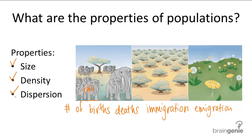The last property of populations is dispersion, and there are three different patterns of dispersion. The most common is clumped dispersion, which occurs when individuals in a population are seen in groups. Elephants travel in groups, and clumped patterns are most often seen in animal populations because animals travel in groups for protection in numbers. Examples include a school of fish, a pack of wolves, and a flock of geese.